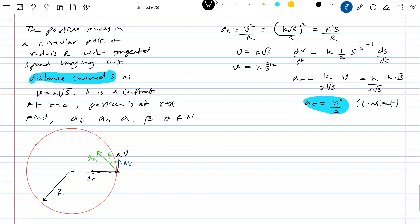Sir, the speed varies with the distance. Then A tangential can be constant as the mathematics is showing us. Then what is the total acceleration vector? Total acceleration vector equal to... this is A normal. K square S by R, K square by 2.